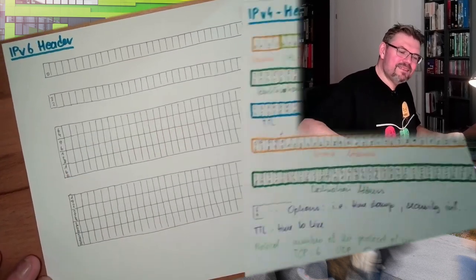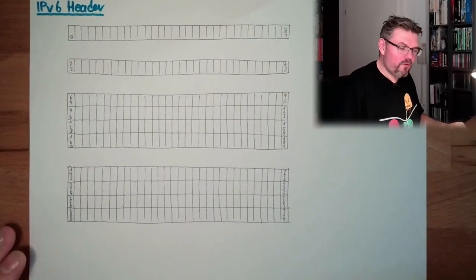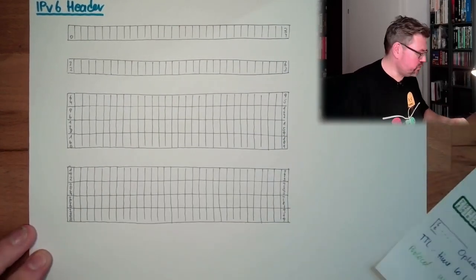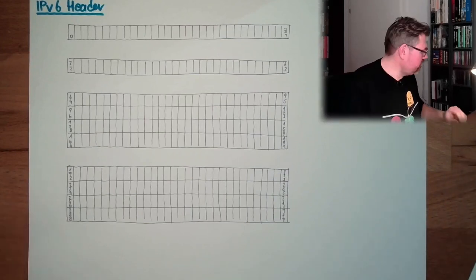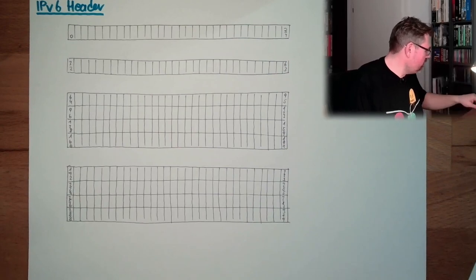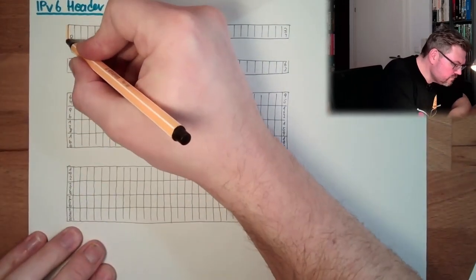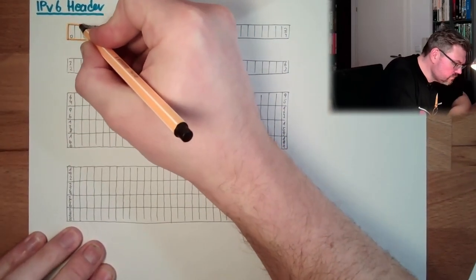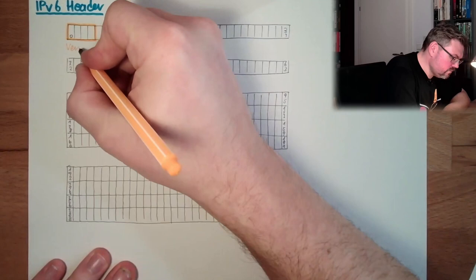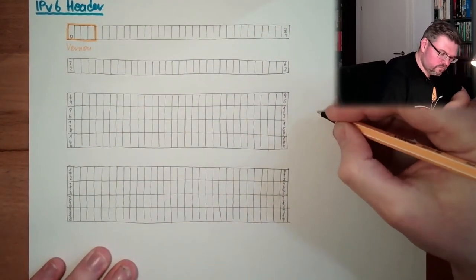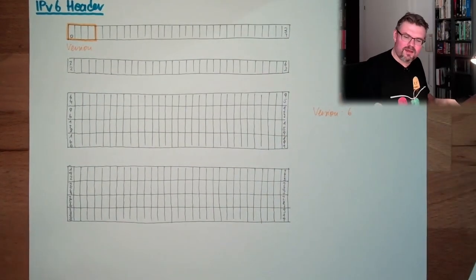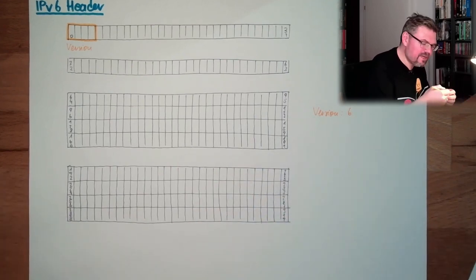Internet Protocol Version 6 is an Internet Protocol. So the first, again like here, the first four bits are the version. Let's try to map the colors. The version 4 bits. Here there is 6 written in. Version 6. It's 4 or 6. But here, Internet Protocol Version 6, it's 6.